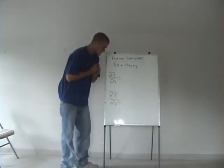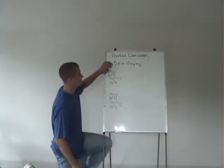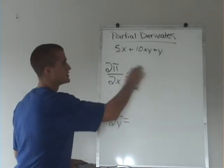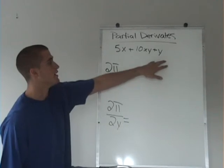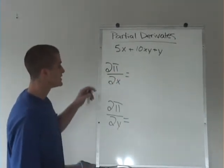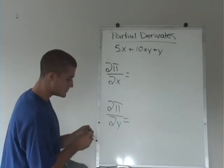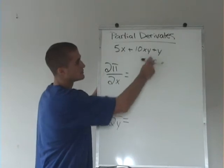When it tells you to take the partial derivative with respect to x of this function up here, what it's saying is to treat x as the only variable in the function and treat all the other variables, which in this case is only y, as a number. So if I'm taking the partial derivative with respect to x, I'm going to do what I usually do when I'm taking a derivative. Take the derivative of each of these individual terms.